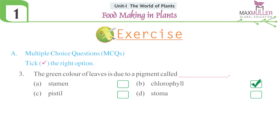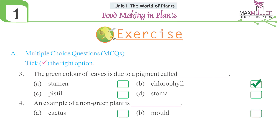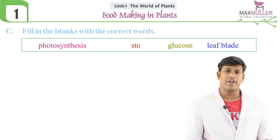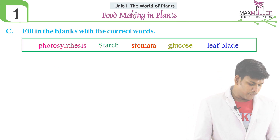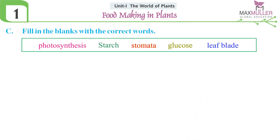Next question: an example of a non-green plant is? Options: a) cactus, b) mold, c) corten, d) all of these. The answer is option c — corten. Now let us see fill in the blanks. You will have a set of options — pick the correct one for the suitable blank.